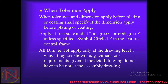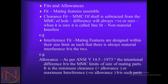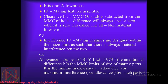For fits and allowances: clearance fit means the difference between hole and shaft will always be positive or zero — when zero it is called line fit with no material interference. Interference fit means mating features are designed within size limits such that there is always material interference between the two. Allowance, as per ANSI Y14.5 1973, is the intentional difference between the mating limits of size — the minimum clearance between such parts.